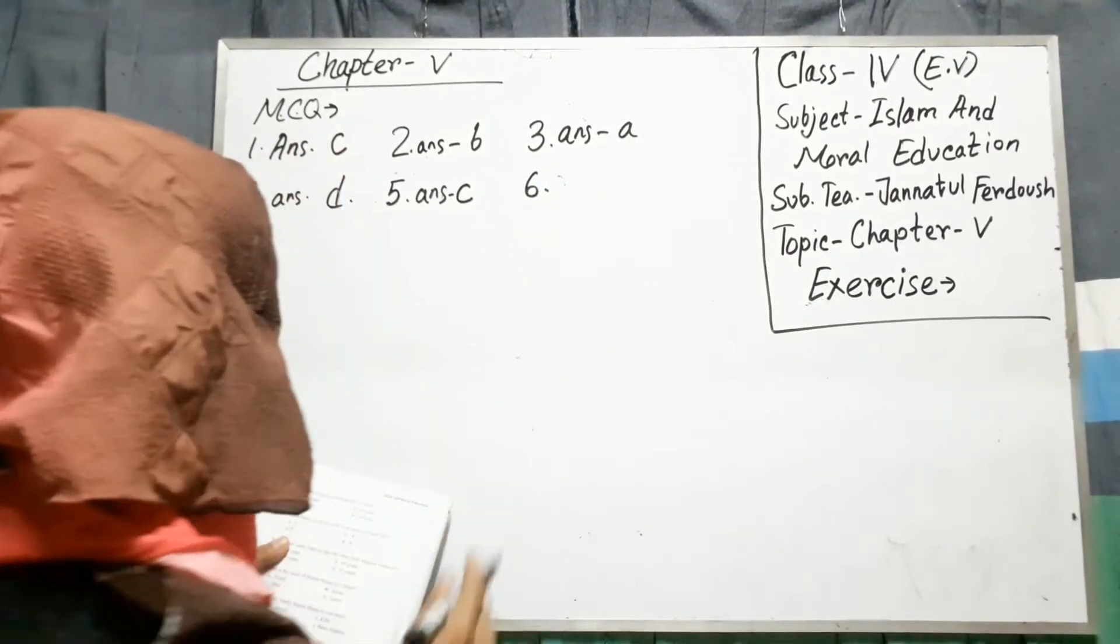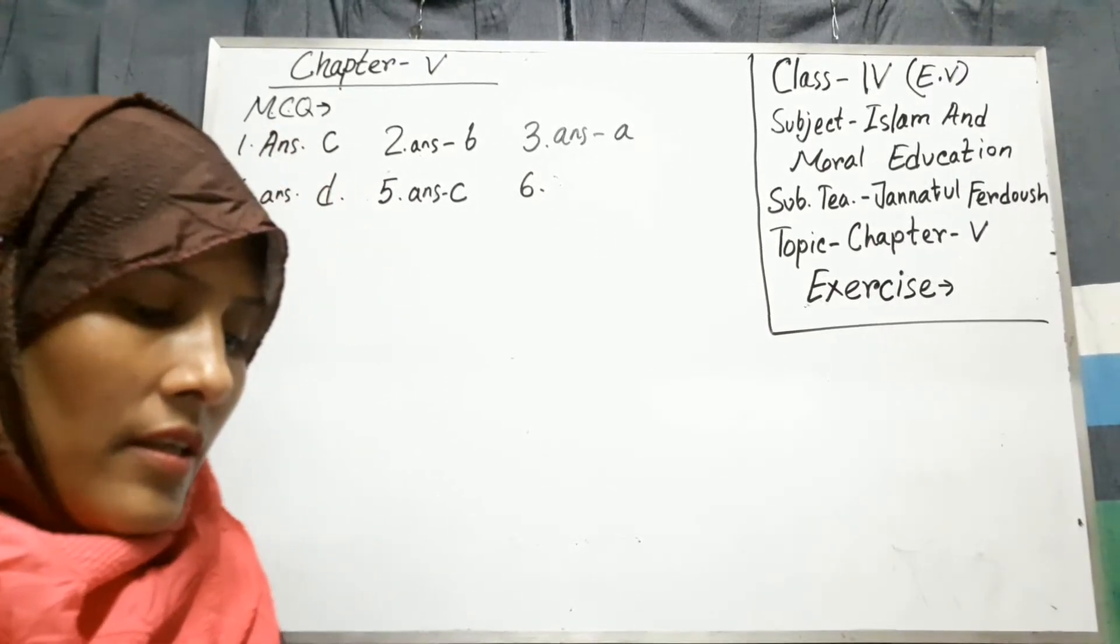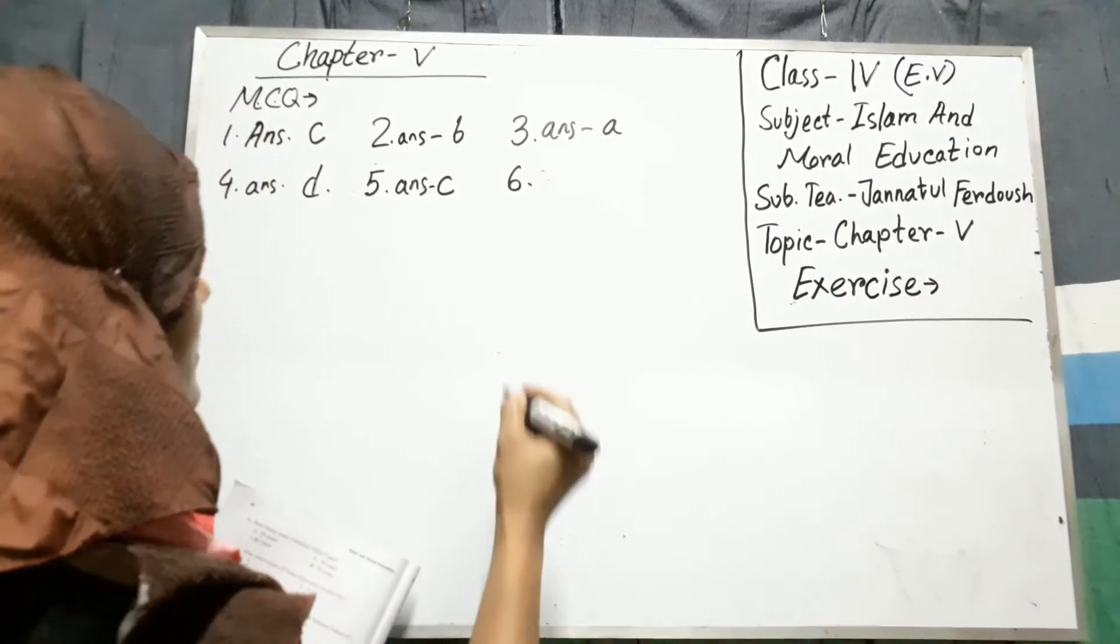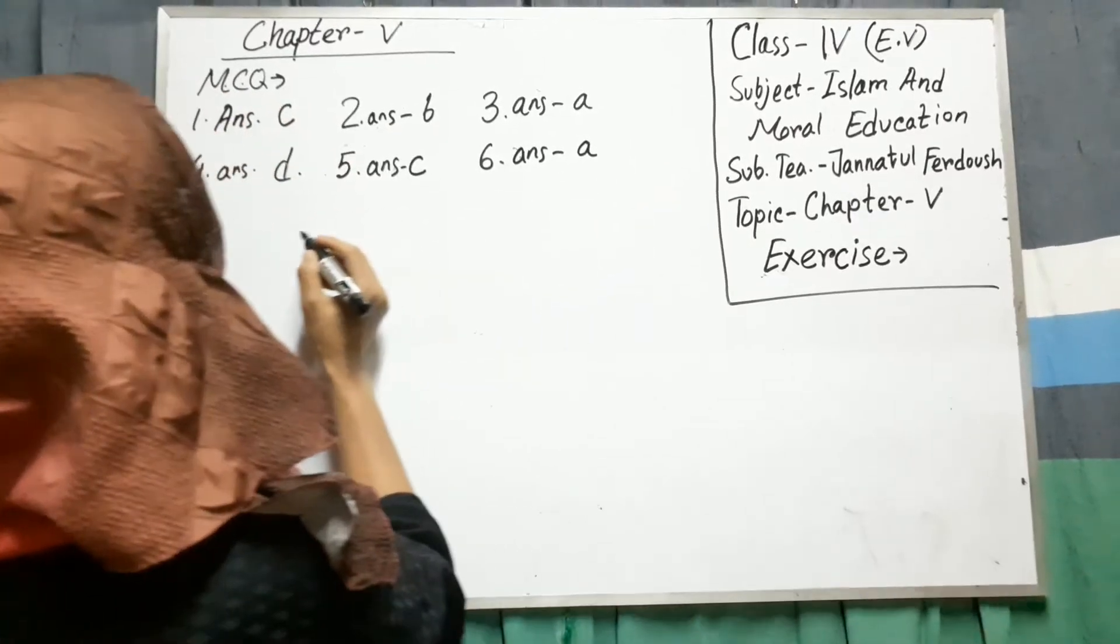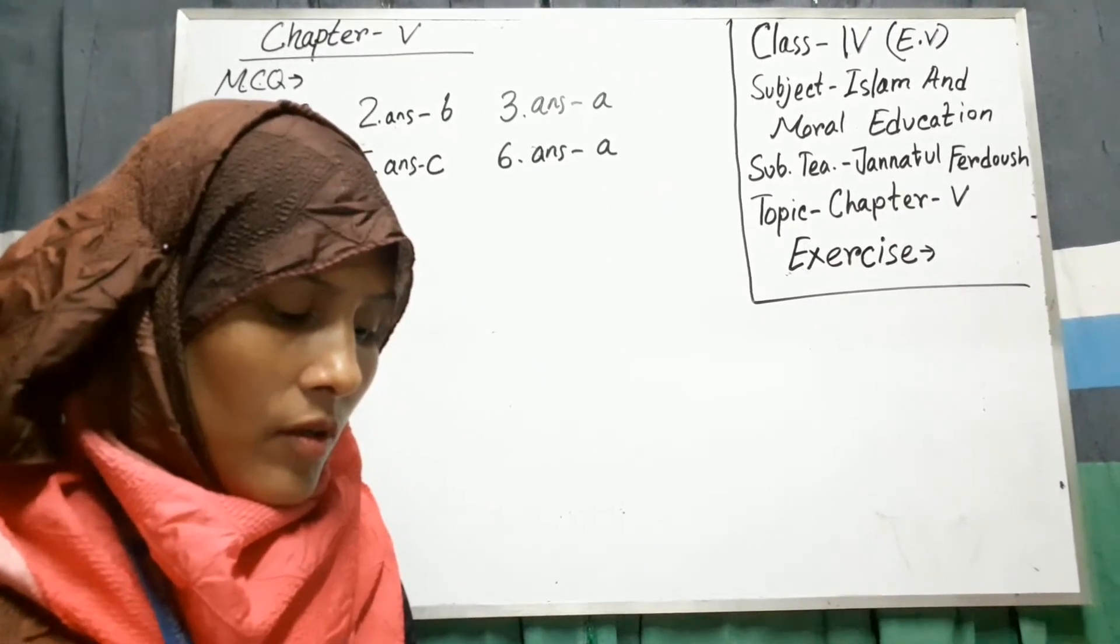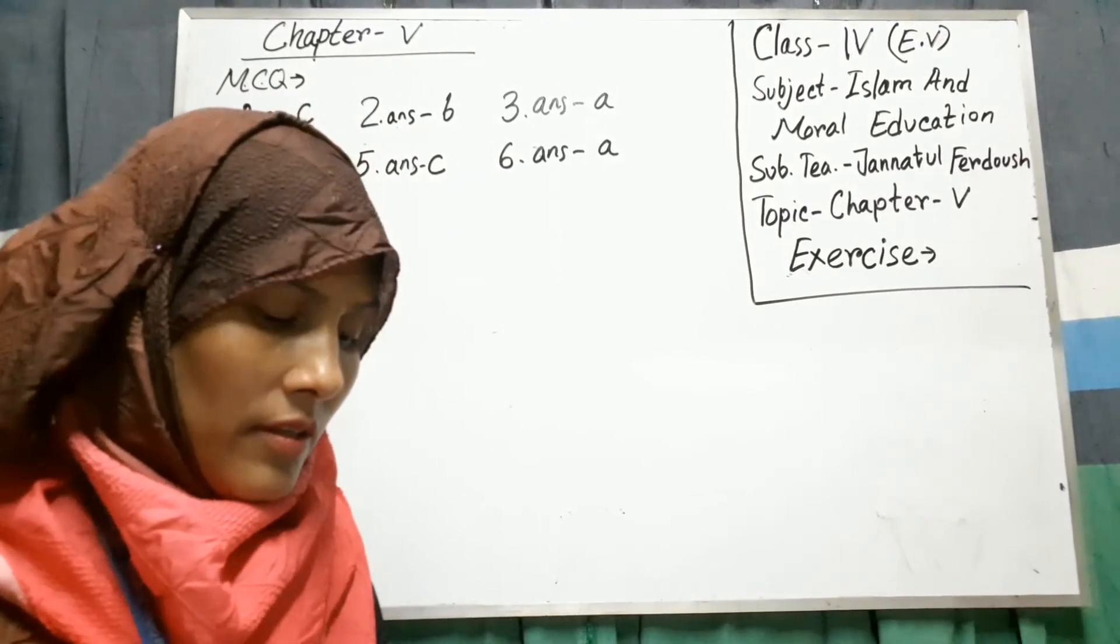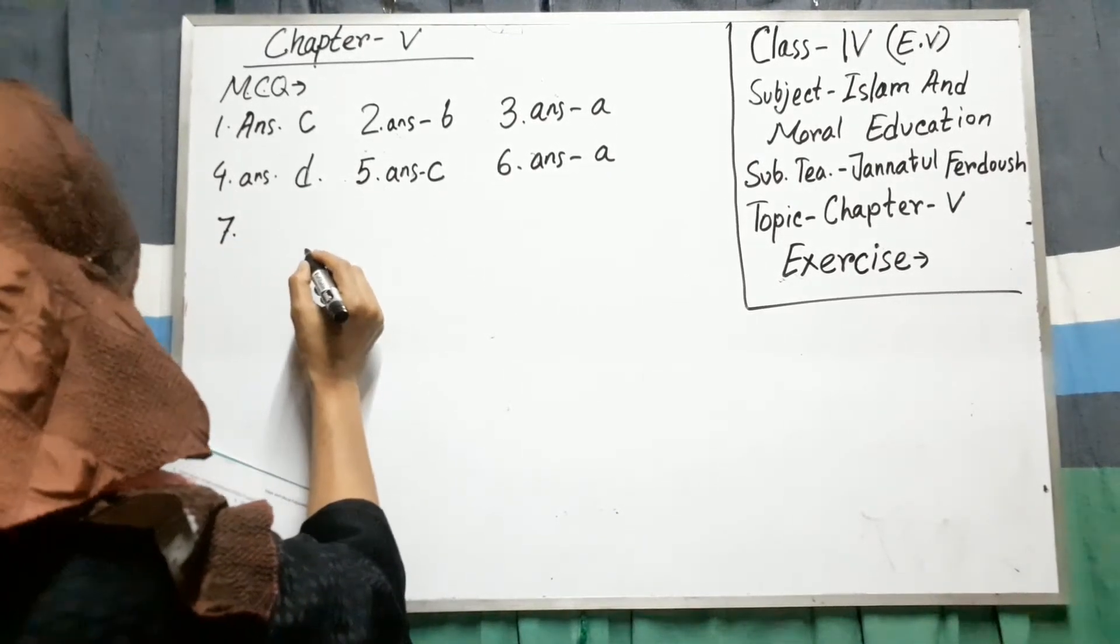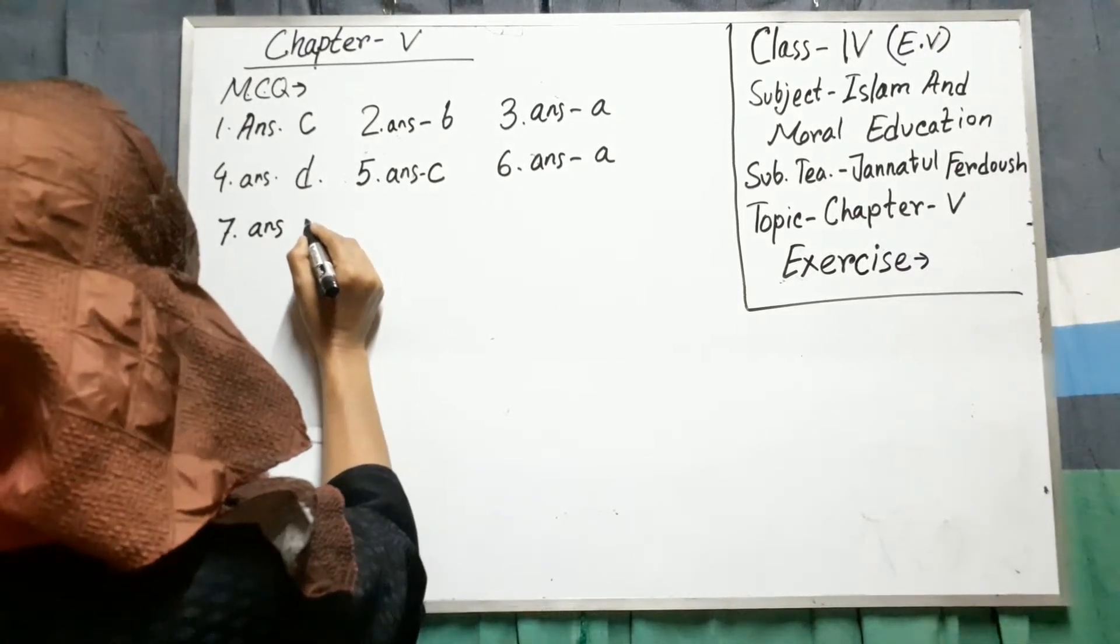Number 6. In how many years of age the great Nabi attained Nubwat? 40 years. Write. A. Number 7. What is the name of Hazrat Musa, Alayhi Aslam's father? Write. 7. Inran. B.